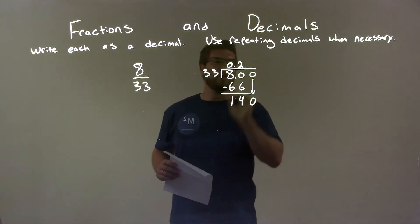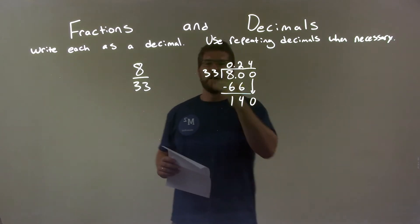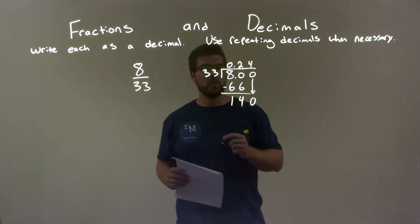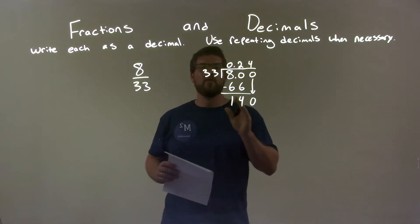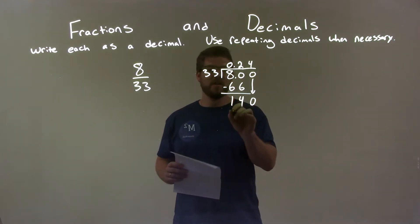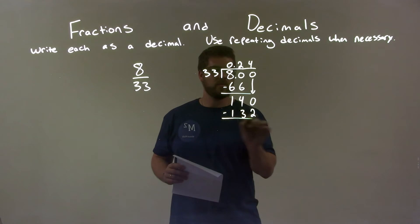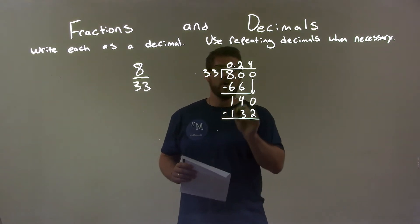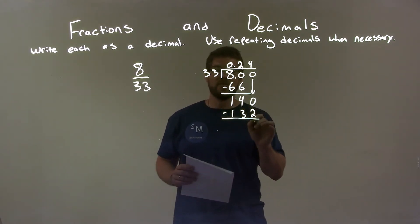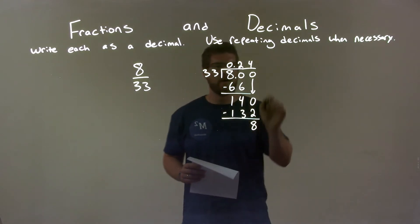This one's going to be four times. Four times 33: four times 30 is 120, and four times 3 is 12. So we have 132 here. We subtract that, and 140 minus 132 — well, that's just 8. And maybe you can see a pattern here.